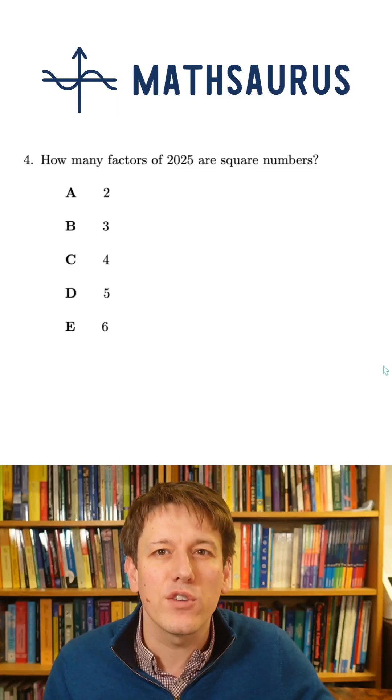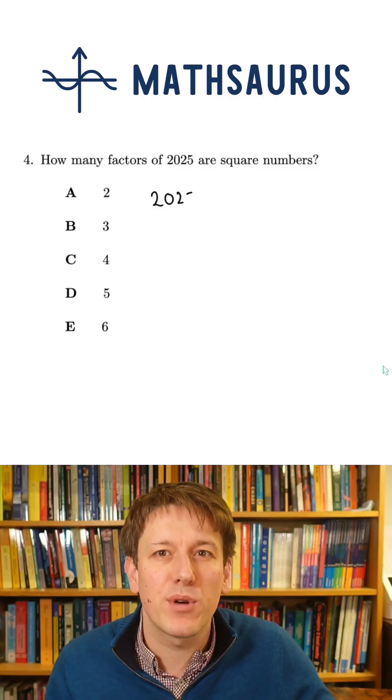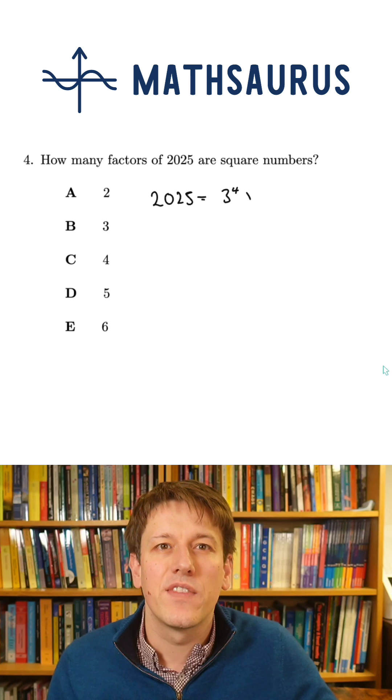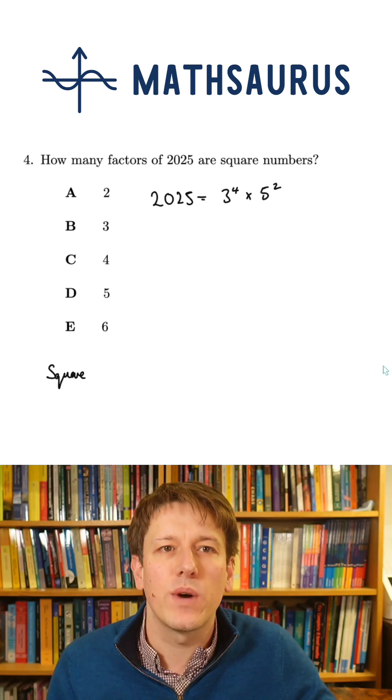How many factors of 2025 are square numbers? We start with the prime factorization of 2025, which is 3 to the 4 times 5 squared.